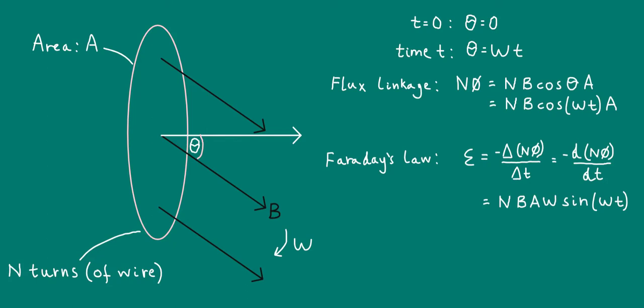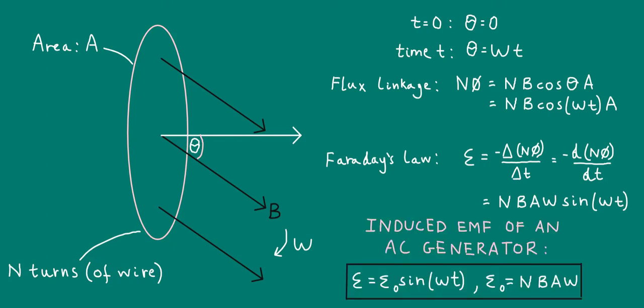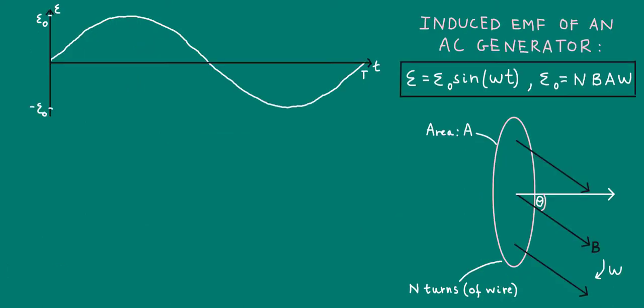Before we look at the graph of this, let's summarize what we've found. Note that it's convenient to call the product of four factors, NBA omega, epsilon 0 or epsilon naught. If we plot the graph, it's just a sine graph. Since the sine graph repeats periodically and alternates between positive and negative values, this explains the alternating current that we saw in the simulation. The maximum or peak induced EMF, epsilon 0, is equal to NBA omega.